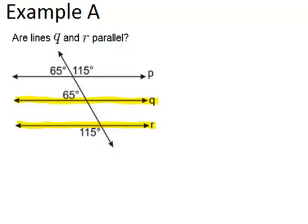From looking at this picture, the first thing I notice is there's a 65-degree angle here and here. This tells me line P has to be parallel to line Q because they have corresponding angles that match.